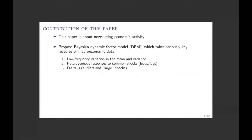Building on our previous work, we propose a Bayesian dynamic factor model which takes seriously a few features of macroeconomic data that we think are very important, and that the previous literature has typically regarded as nuisances or things to assume away. Our goal is to see whether it pays off to model these features explicitly, and whether that is useful for the purpose of tracking economic activity in real time.